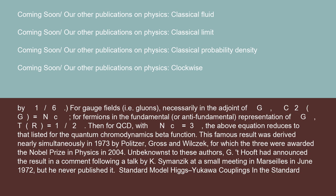For gauge fields (i.e., gluons), necessarily in the adjoint of G, C_2(G) = N_C. For fermions in the fundamental or anti-fundamental representation of G, T(r) = 1/2. Then for QCD with N_C = 3, the above equation reduces to that listed for the quantum chromodynamics beta function.